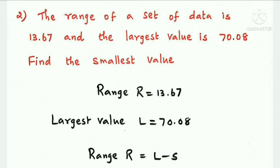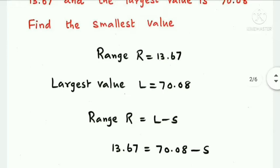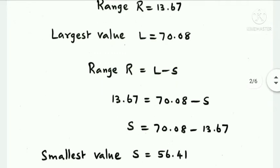We need to find the smallest value S. Using the formula Range R equals L minus S, we substitute: 13.67 equals 70.08 minus S. Rearranging, S equals 70.08 minus 13.67. Therefore the smallest value S equals 56.41.